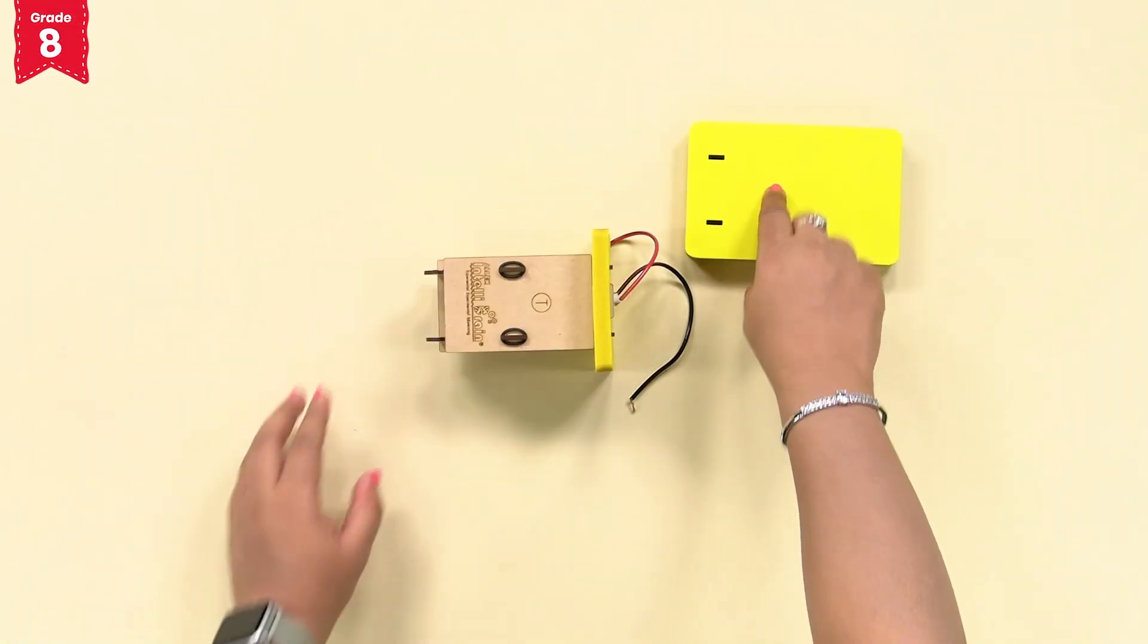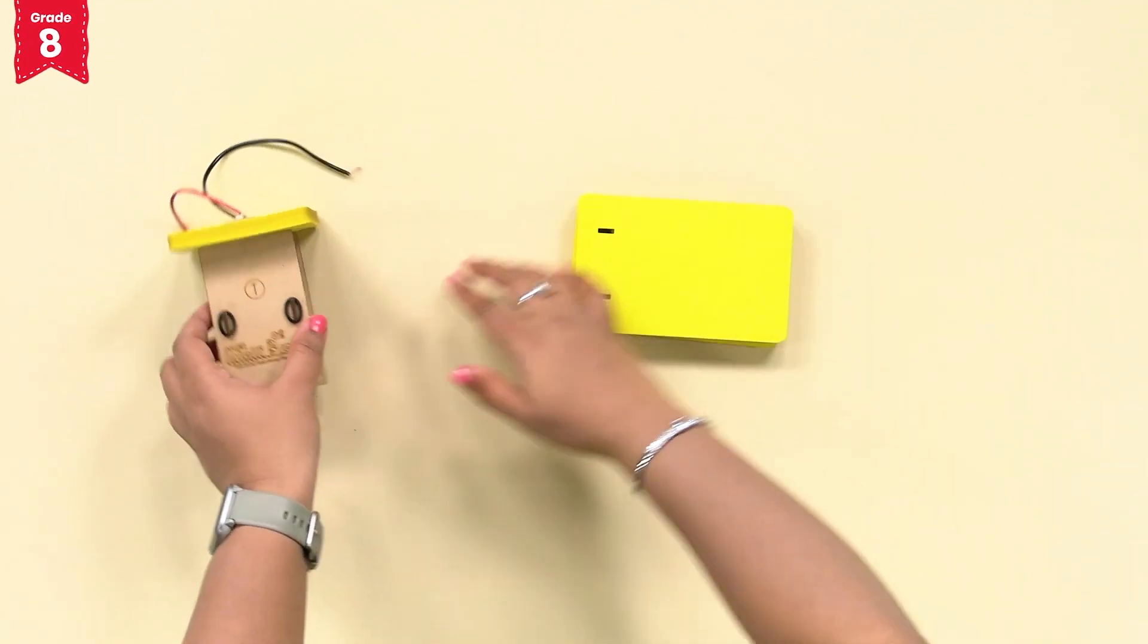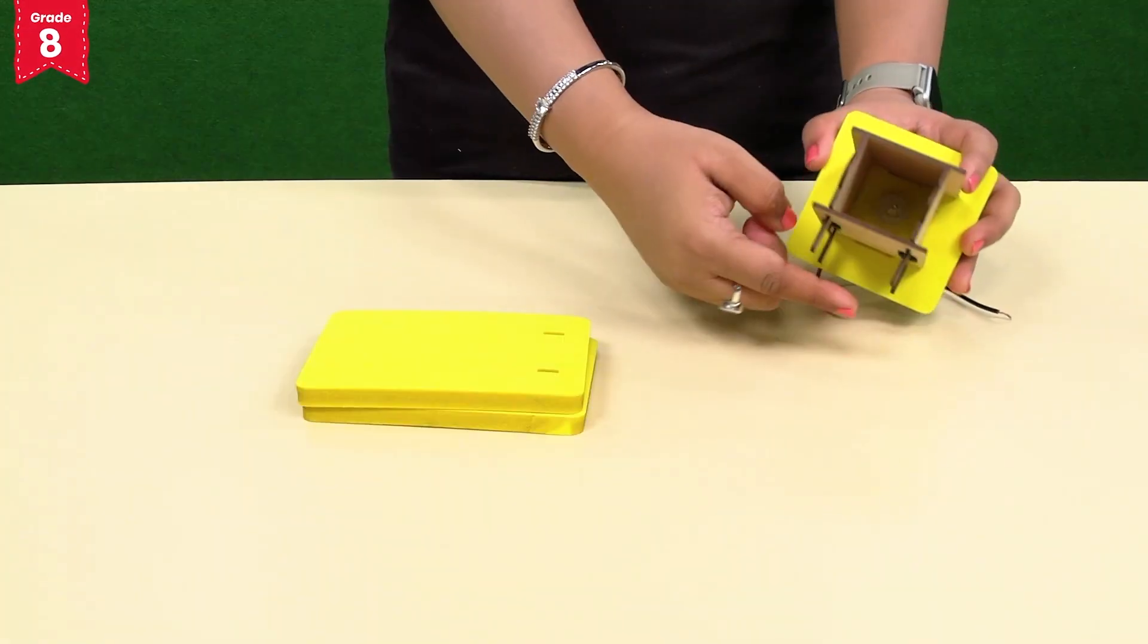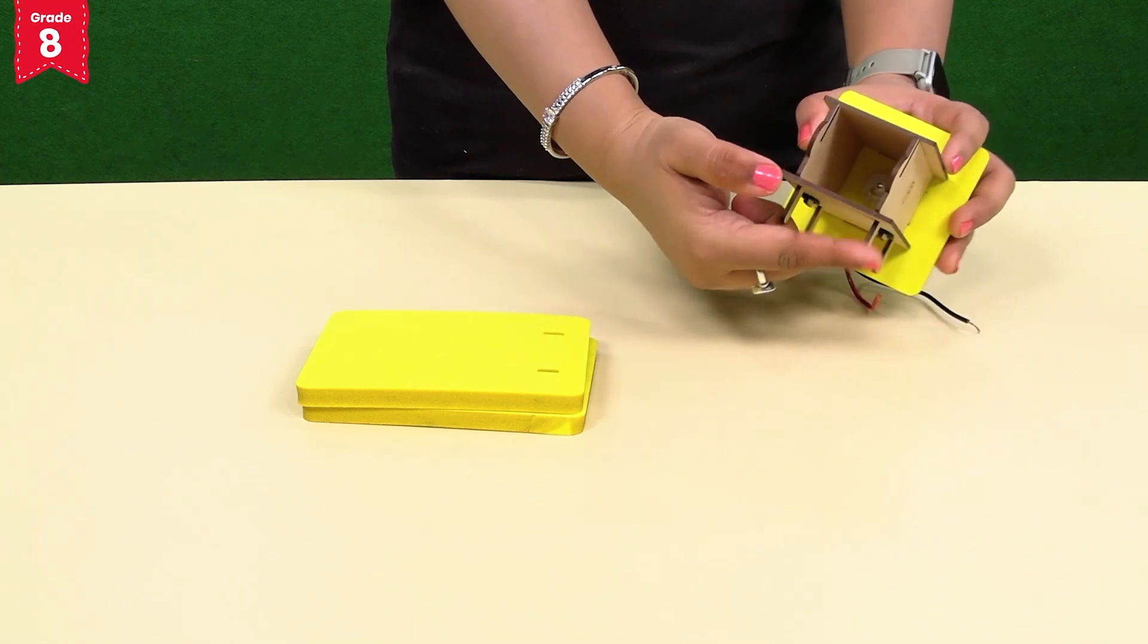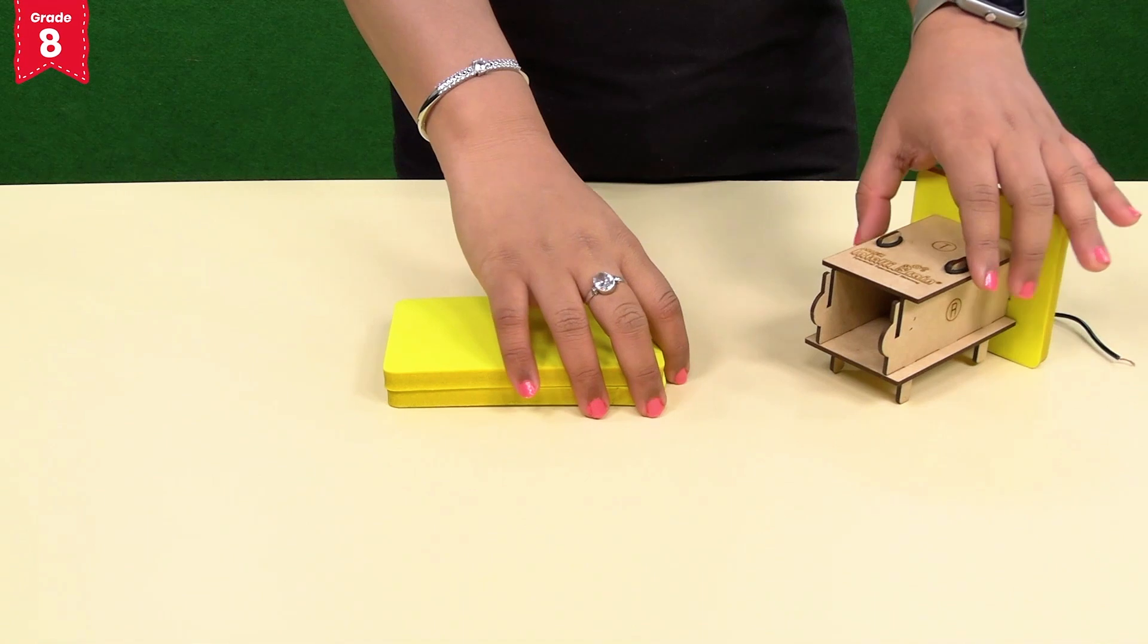Take both the big foam pieces and insert the extended parts of plates L and R into these slits like this.